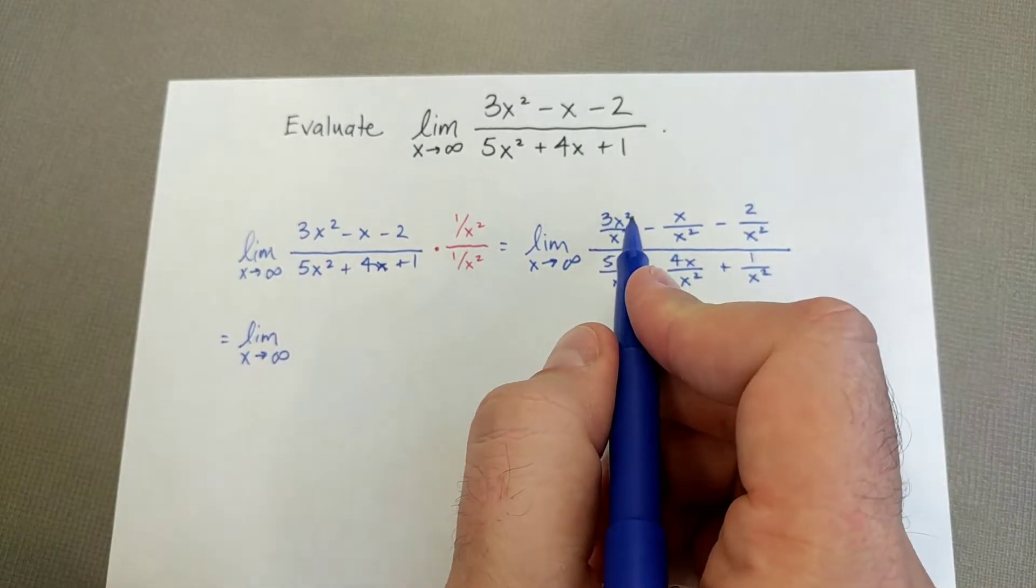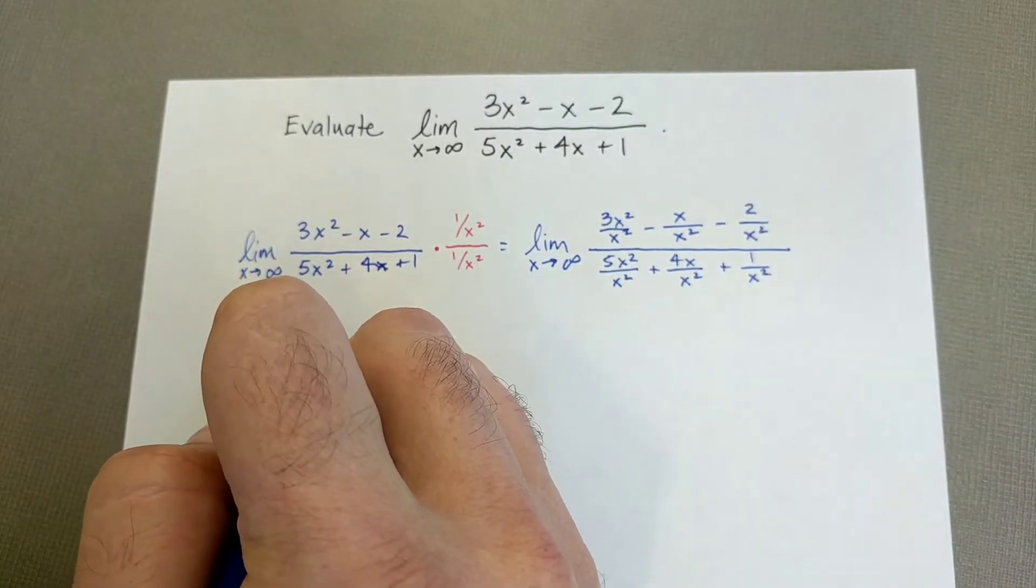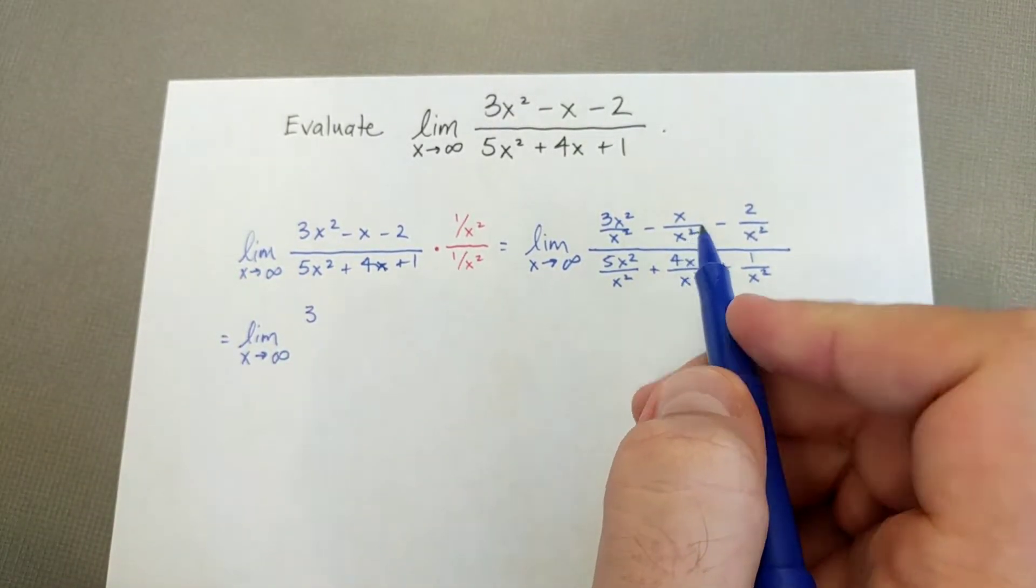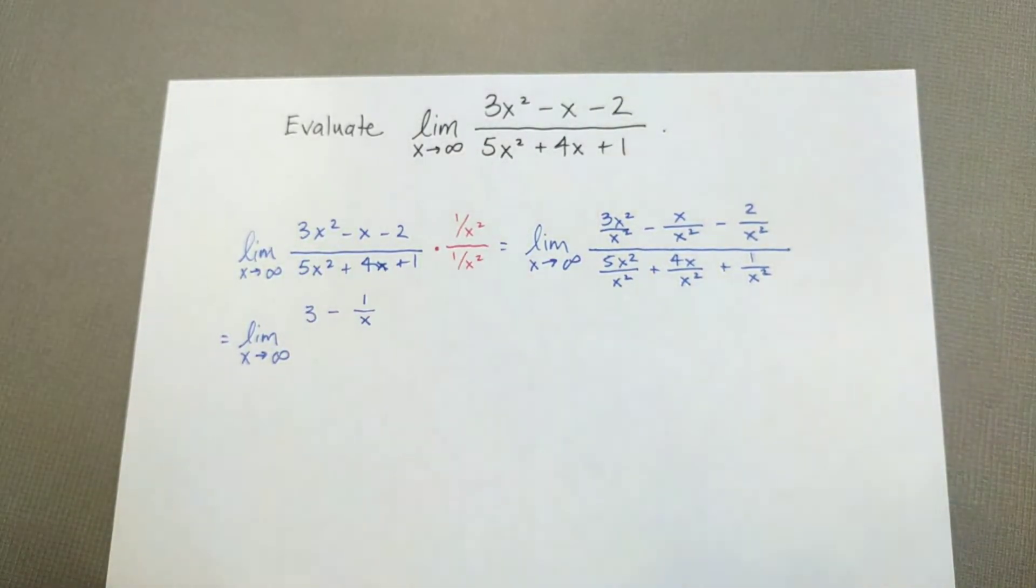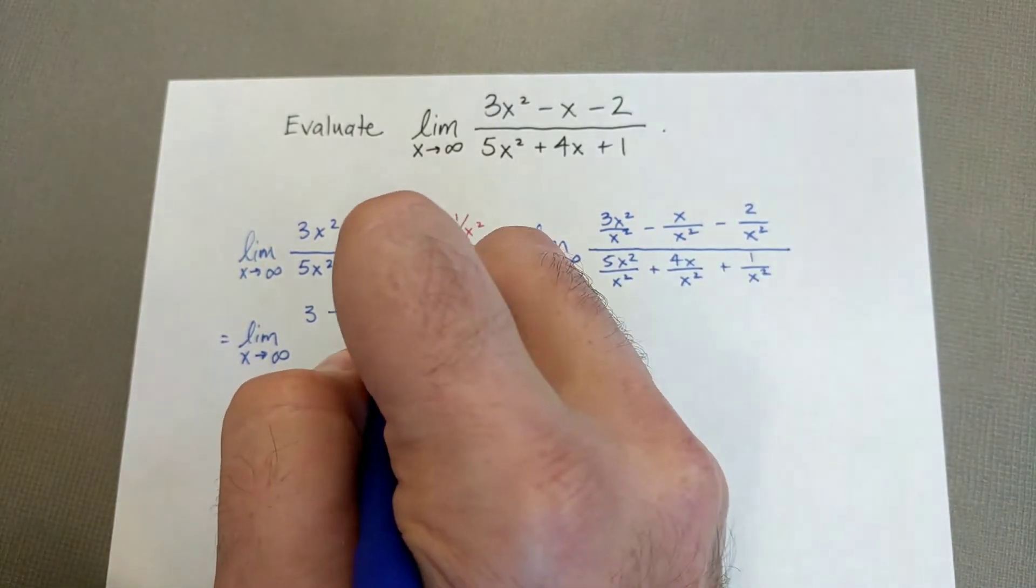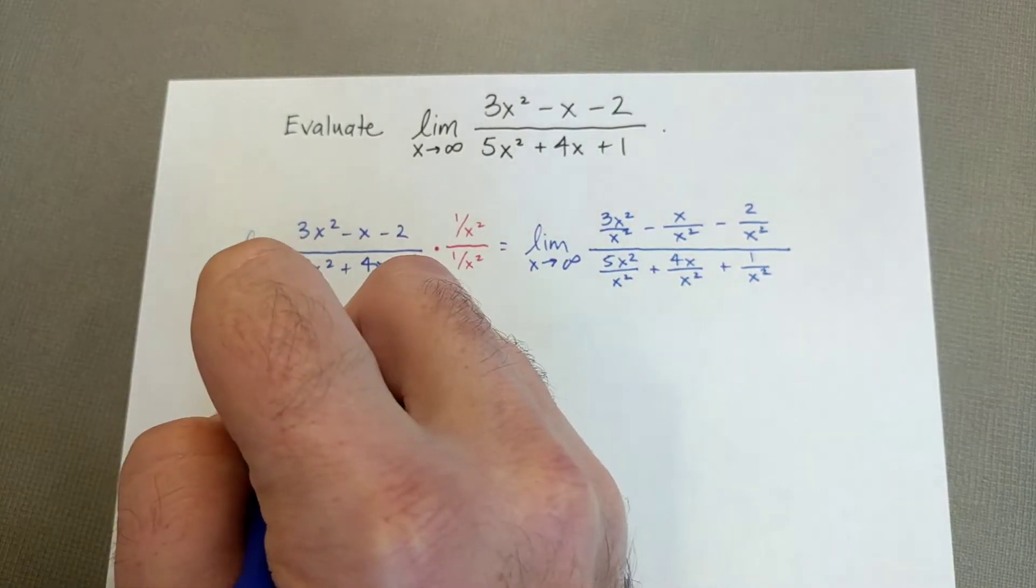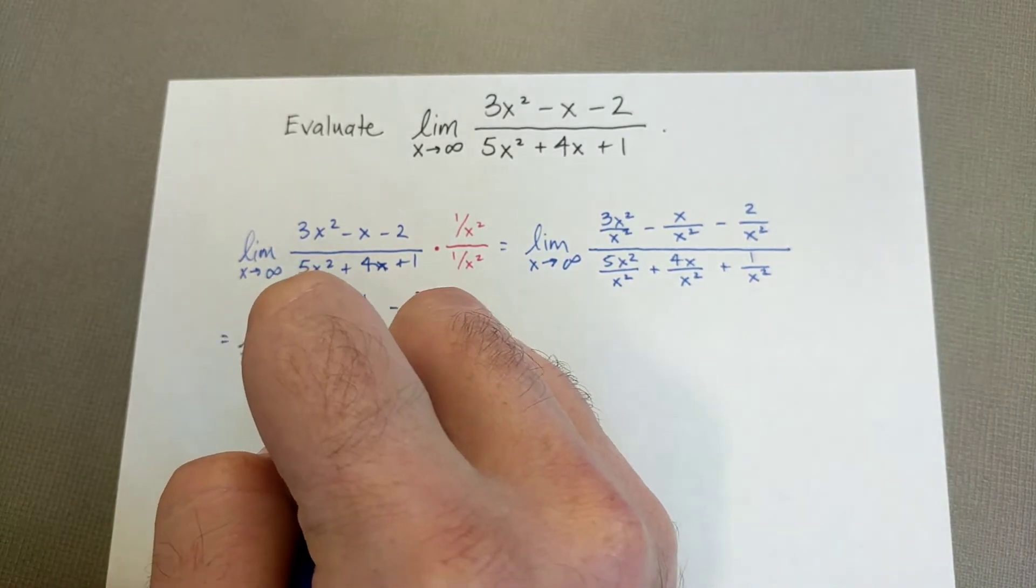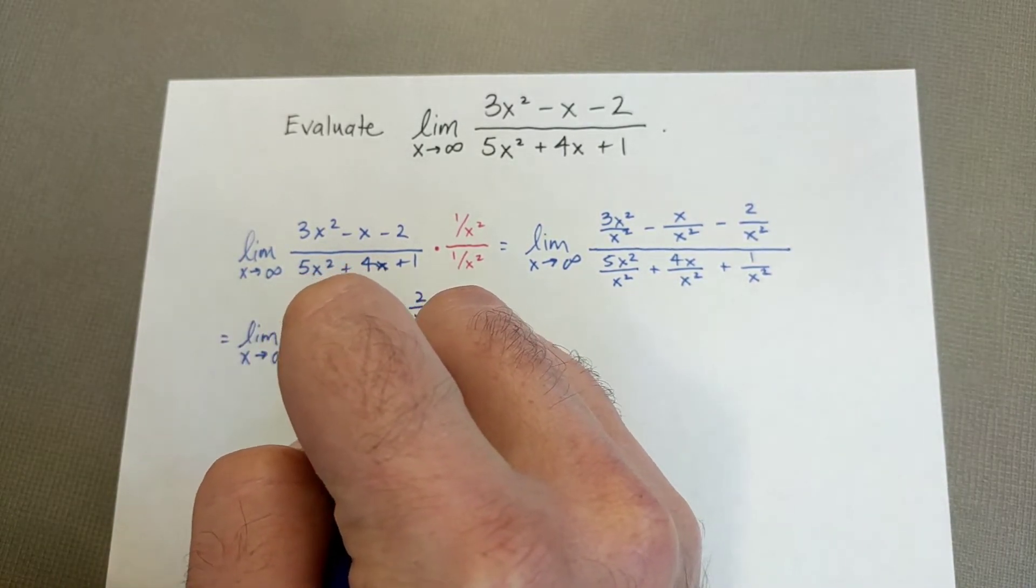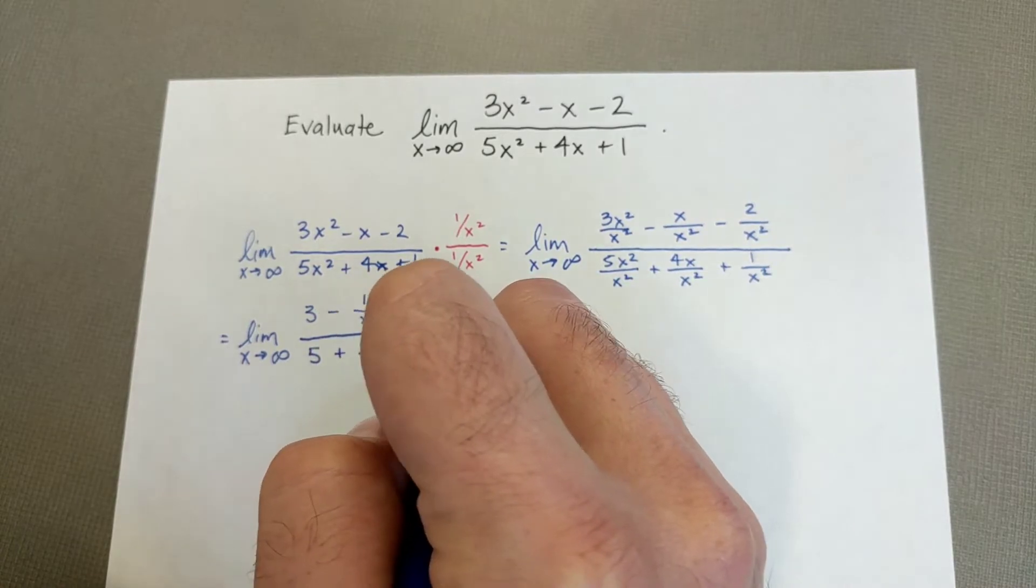So let's see what we get here. So 3x squared over x squared, well, that's just 3. x over x squared, well, one of those x's will divide with the other, leaving us with 1 over x. And that last term cannot be simplified any further or reduced. So, and now the same thing for the denominator. We'll get a 5 plus a 4 over x plus 1 over x squared.